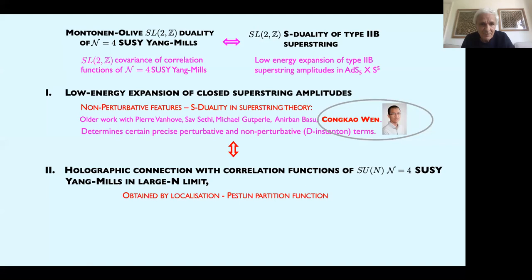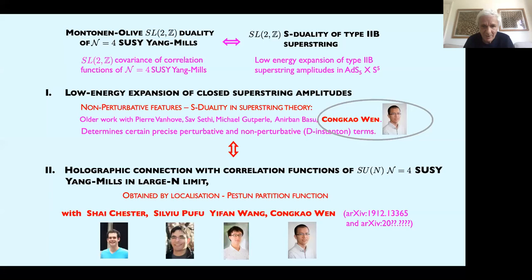The idea is, in the first half of the talk, to review some of the features of the low energy expansion in string theory and what we know about the exact coefficients in the low energy expansion. In the second half, to talk about obtaining these coefficients and their ADS generalizations by using techniques pioneered by collaborators Shai Chester, Sylvia Pufu and Yifan Wang, in trying to understand the non-perturbative features of these connections.